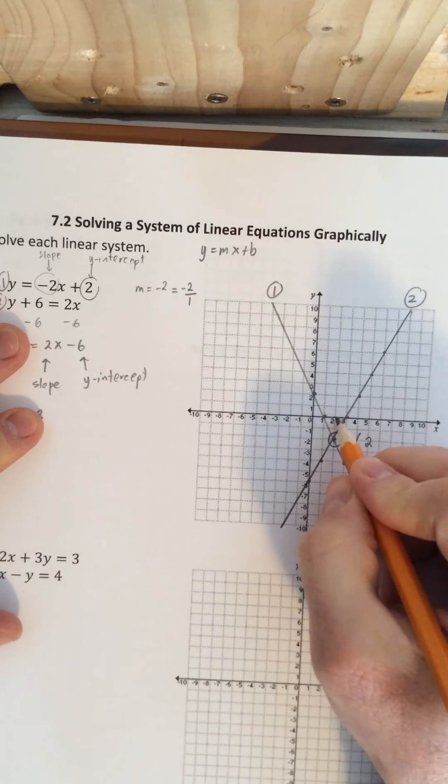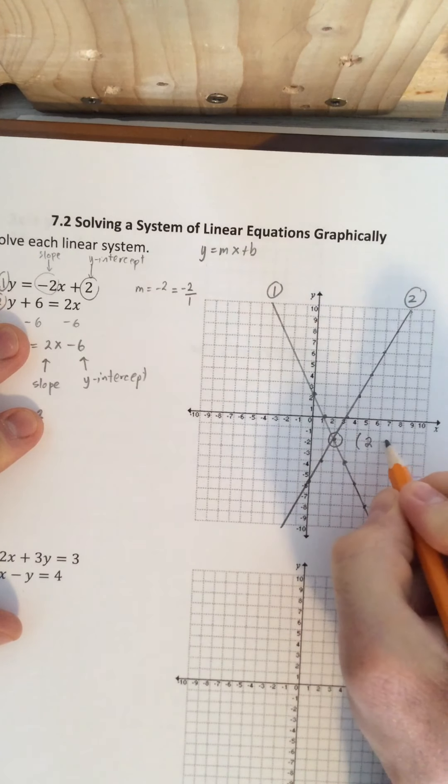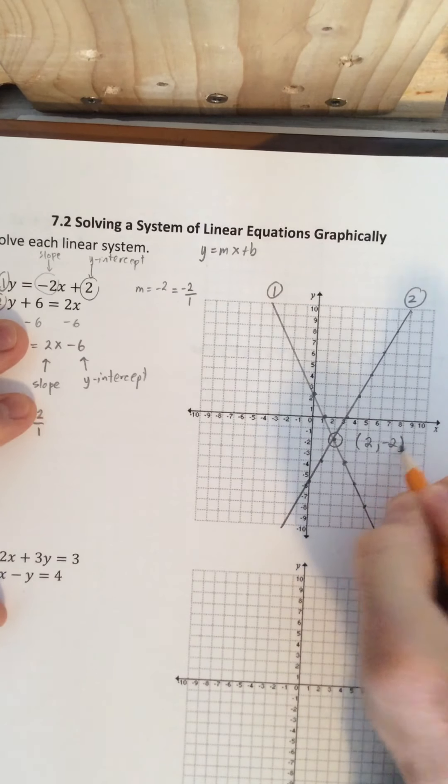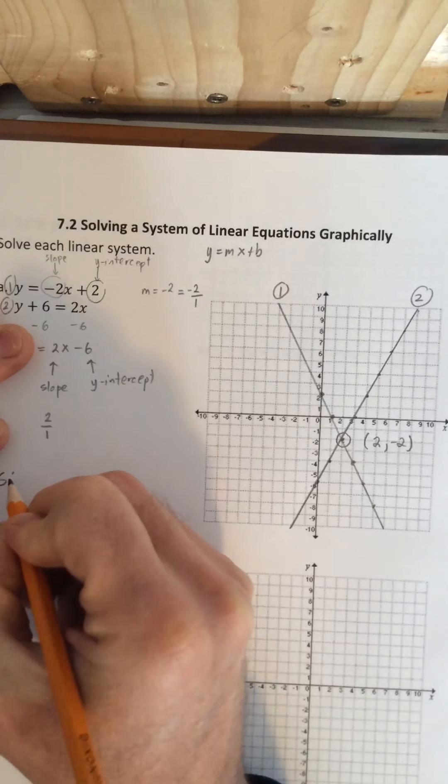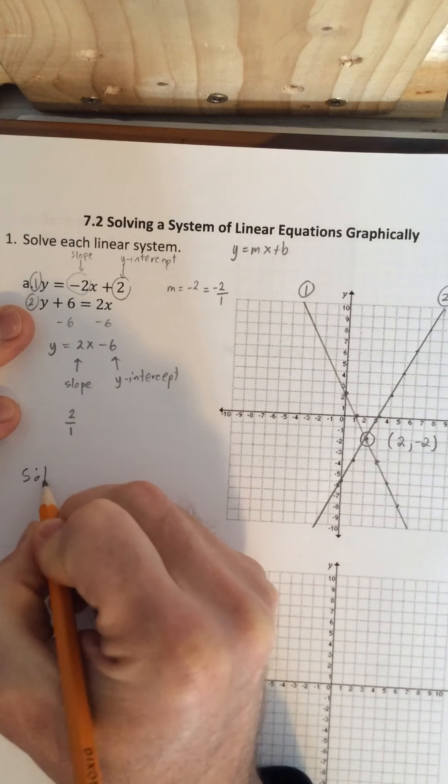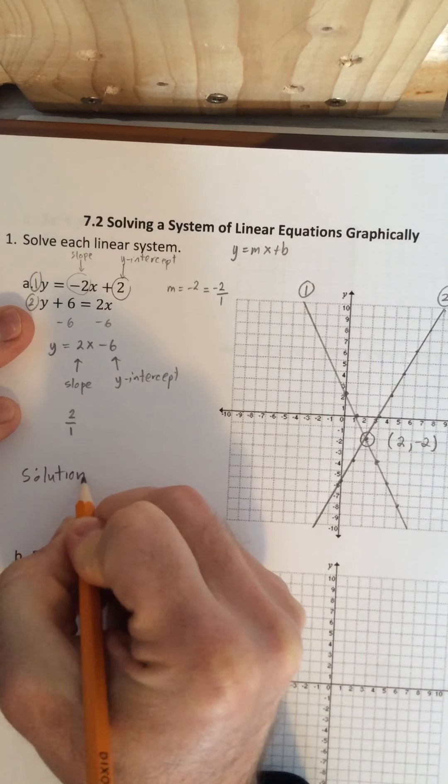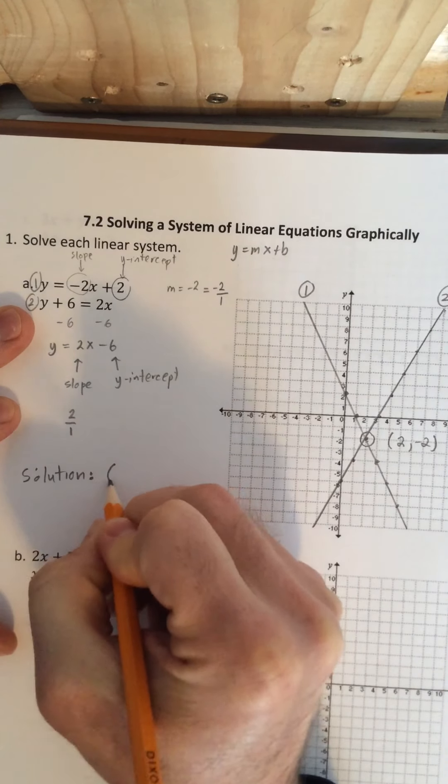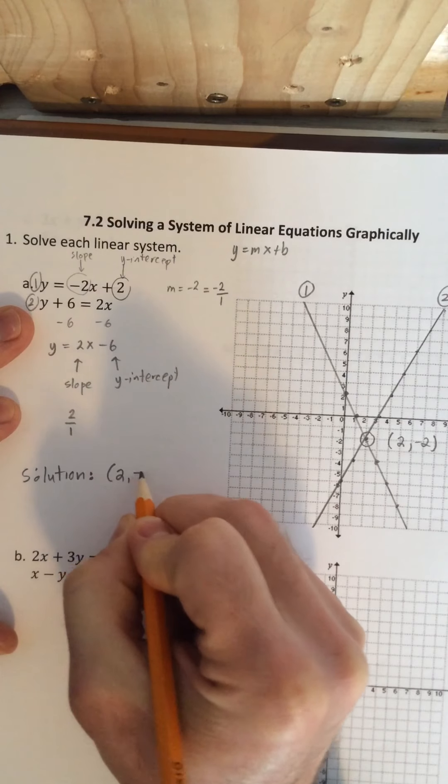2 along x and negative 2 along y. So the solution is this. It is 2 and negative 2.